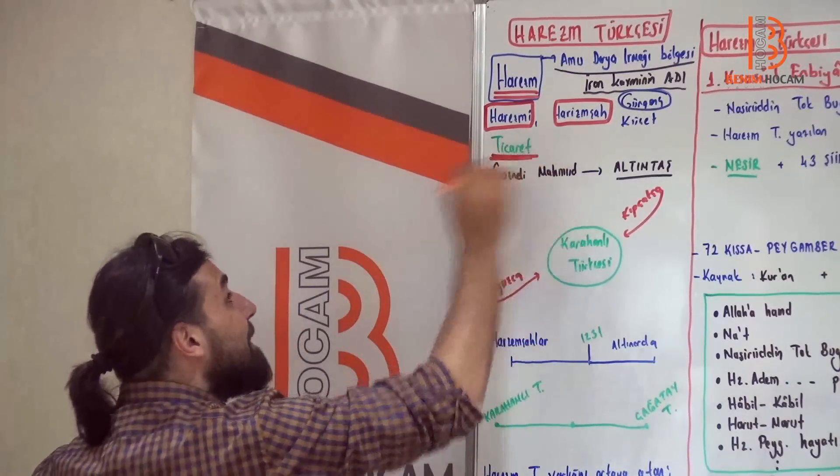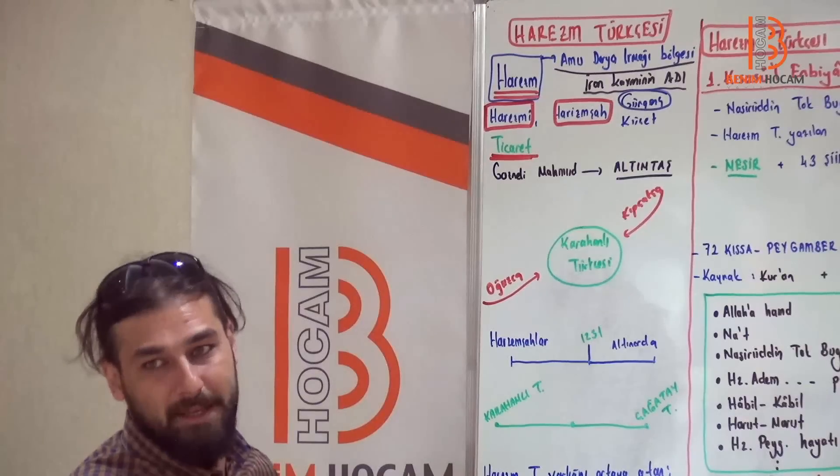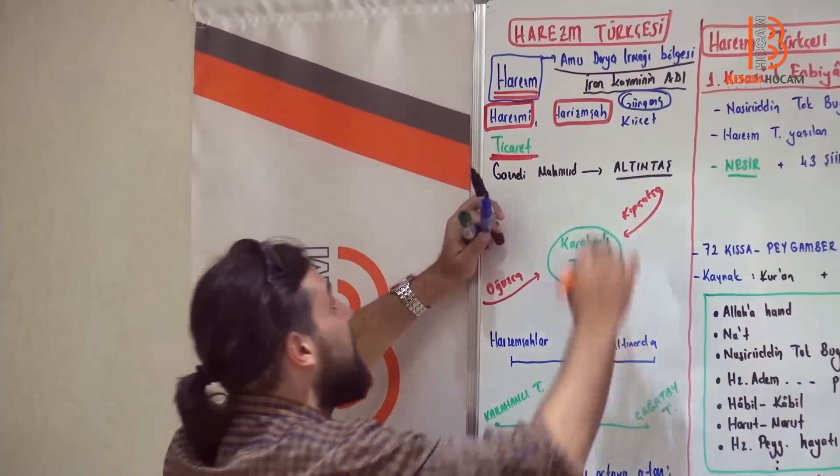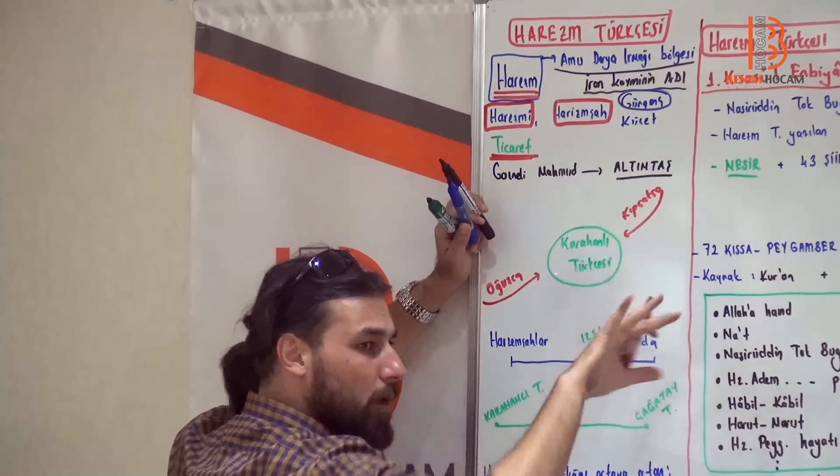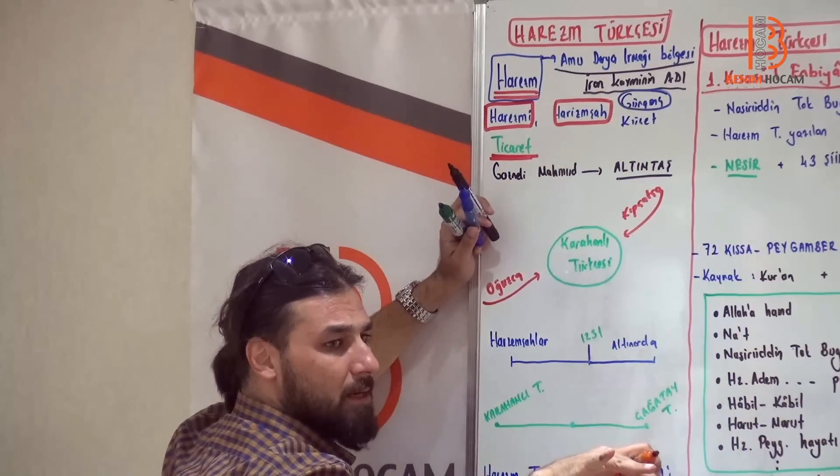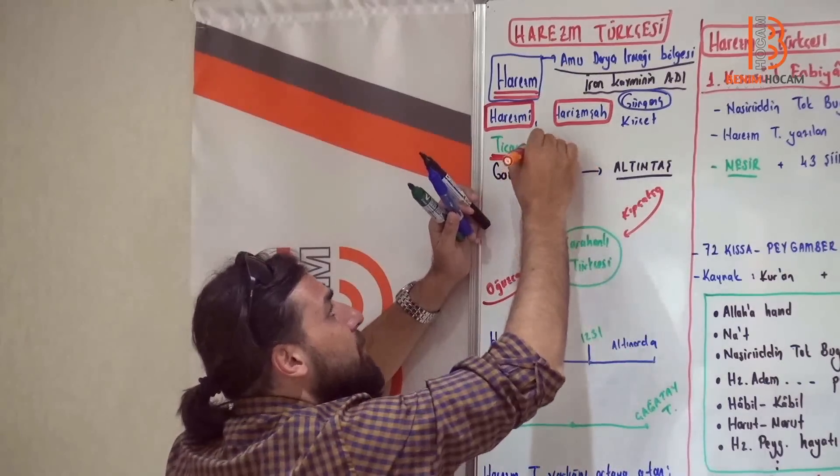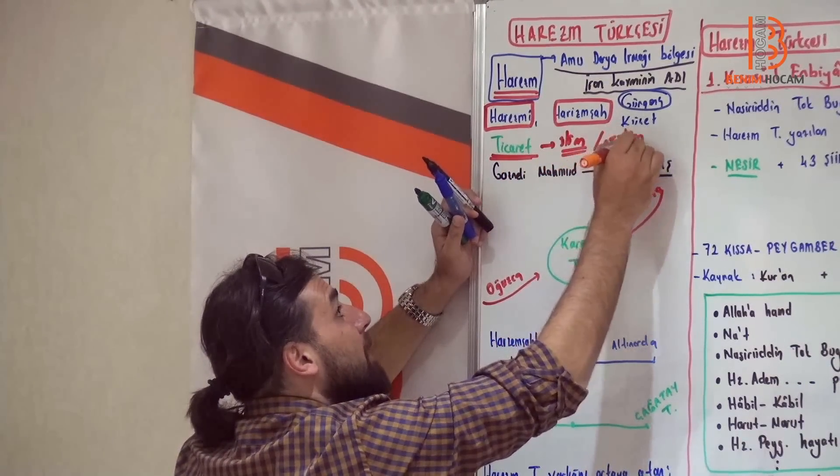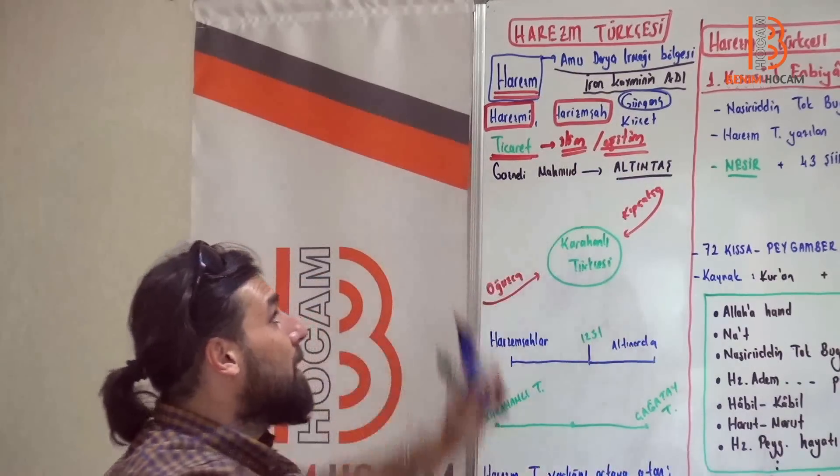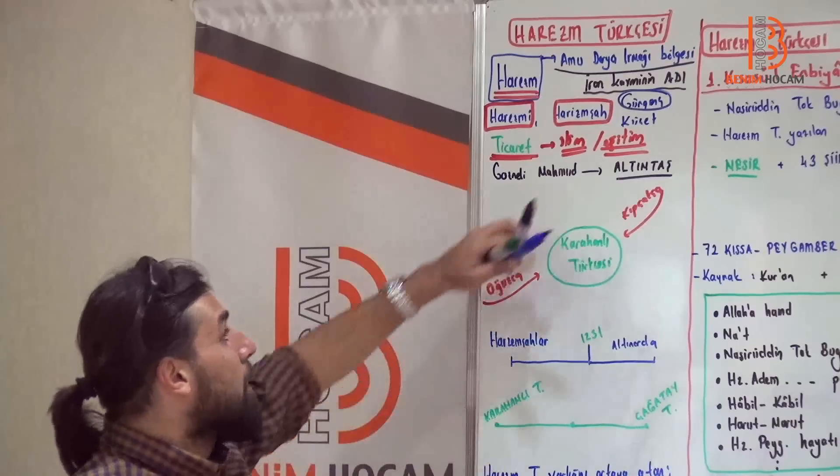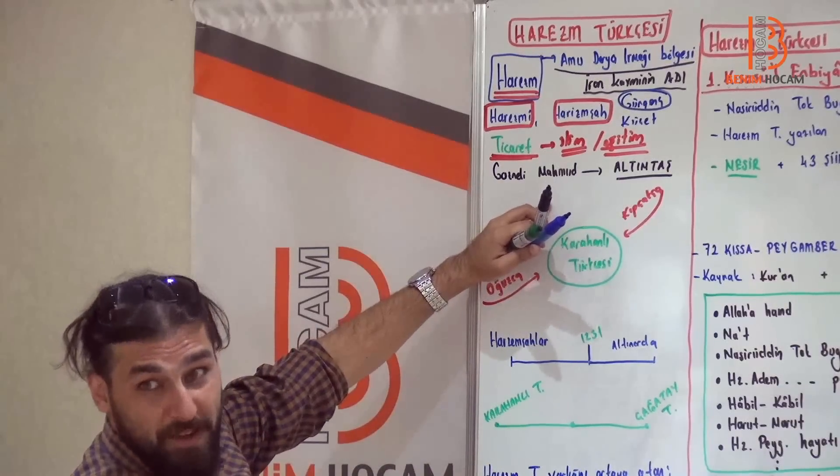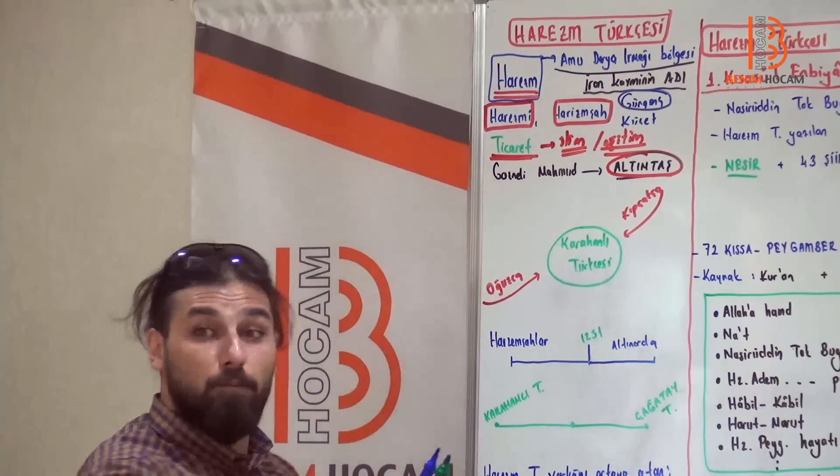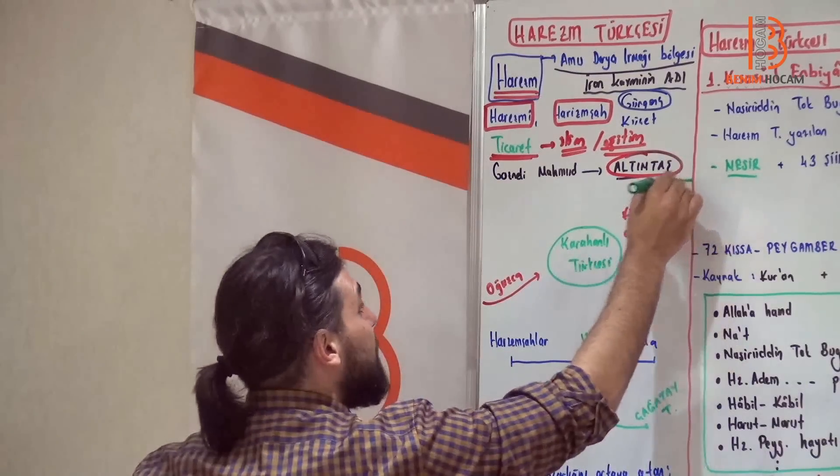Bazen Gürgenç ya da Küçet olarak da anılmıştır. Gürgenç zaten başkent demektir. Şimdi burası ticari bir yerdir, ticaret gelişmiştir. Ticaret geliştiği için arkadaşlar burada da ilim, ticaret, para. Kendisinden biraz da arkadaşlar çukur olan bölge. İlim ve eğitim anlamında da kendisini diğer yerlere göre hissettiren bir yerdir.